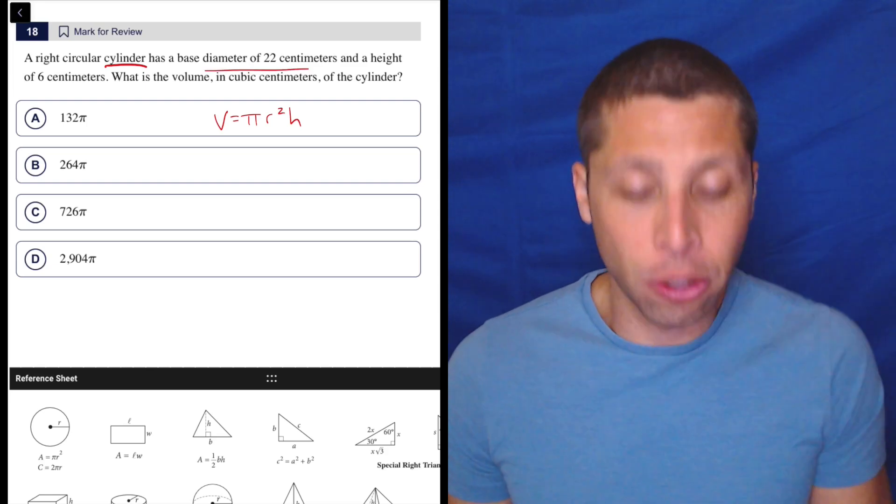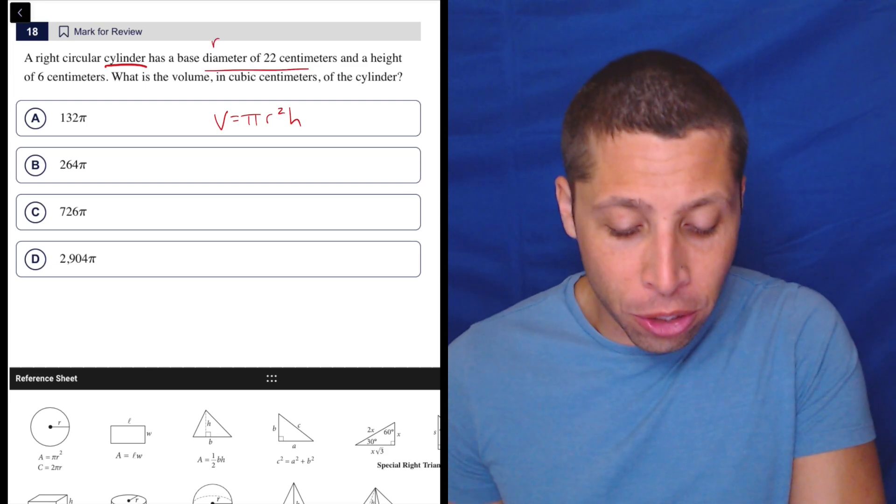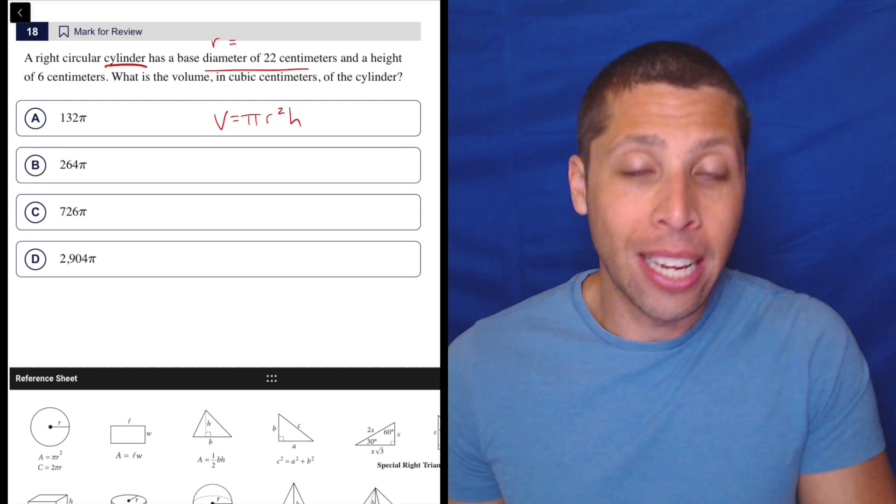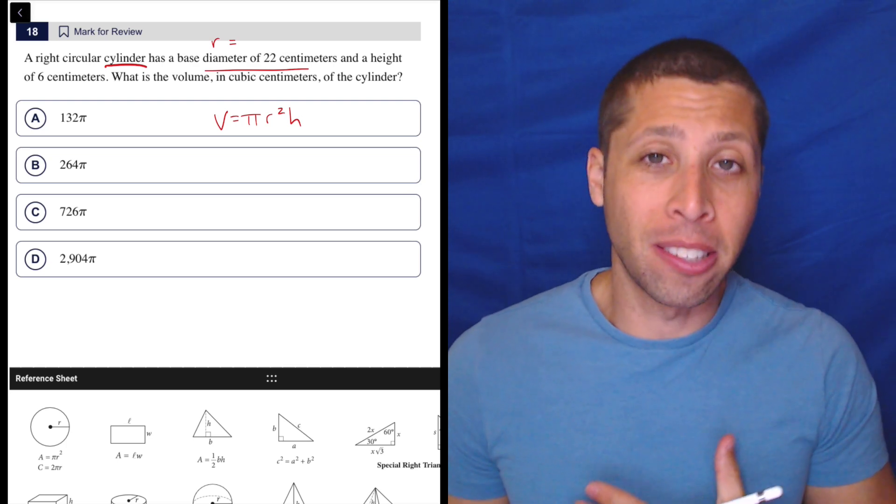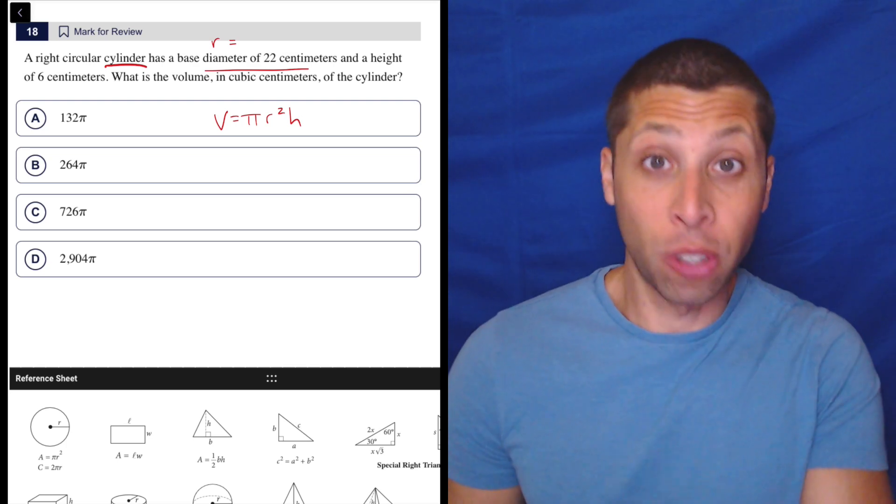So if the diameter is 22, that is not part of the formula. But you do need to know that the radius, the r, is going to be half of the diameter. It is the same rule for cylinders as it is for circles.